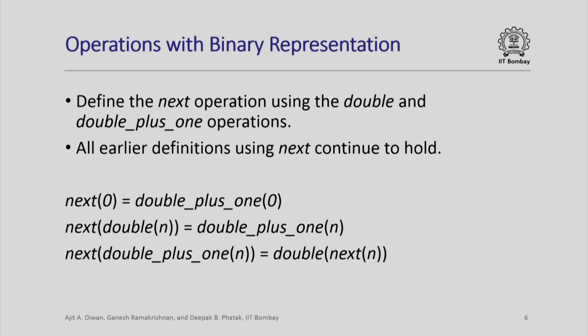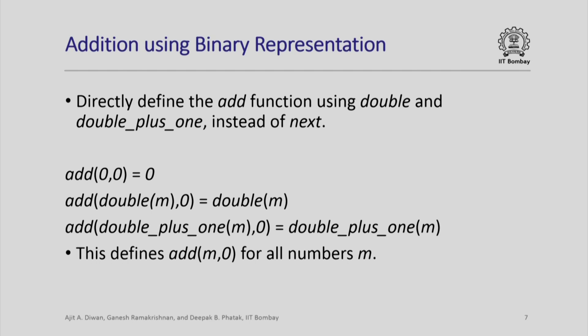Now everything remains the same: just as we defined operations using next, we can define operations using double and double_plus_1. The next operation itself can be defined using these two operations. Next of 0 is the same as double_plus_1 of 0, since double(0) = 2×0 = 0. Next of double(n) is defined to be double_plus_1(n), and next of double_plus_1(n) is double of next(n). Once next is defined in terms of these two operations, all other operations can be defined in terms of them, and we can directly define them using double and double_plus_1, giving a more compact and efficient definition.